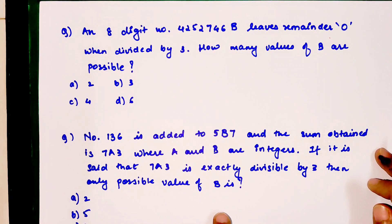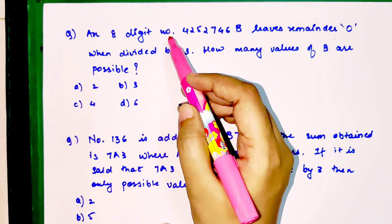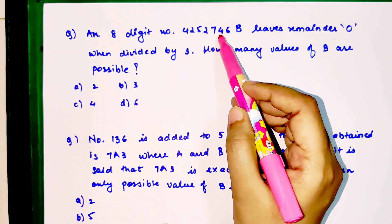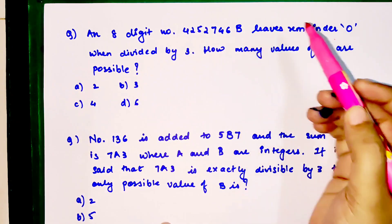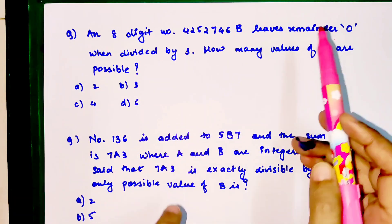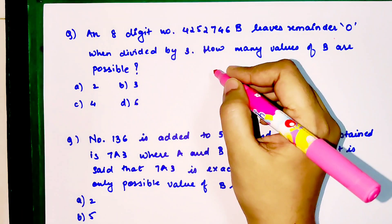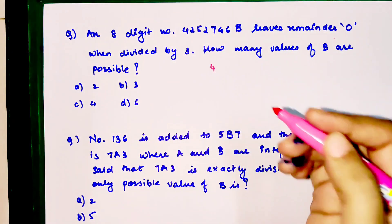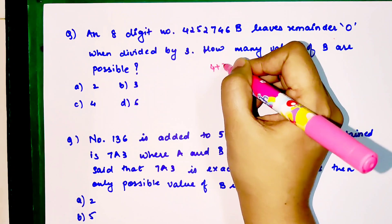Here we have an eight-digit number 4252746B. This number when divided by three gives you a remainder of zero, meaning this number is completely divisible by three.